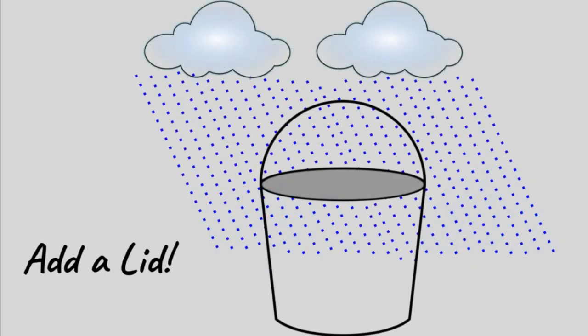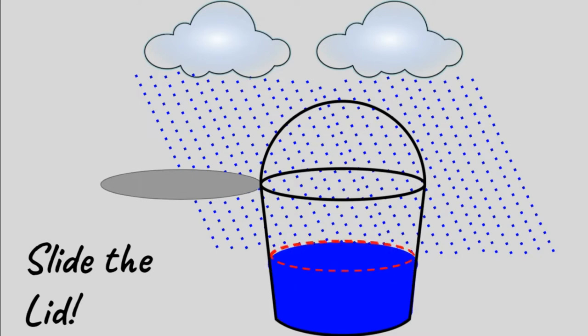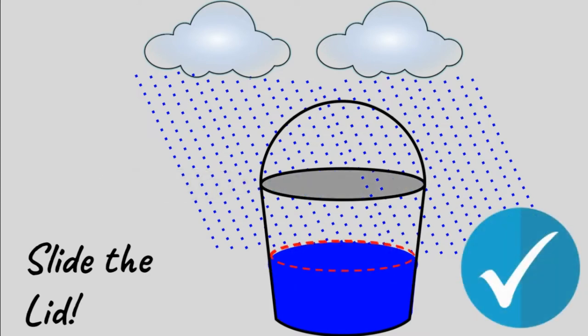Another way to accomplish this is to add a lid on the bucket. When you slide the lid open, water starts to fill up in the bucket. As soon as it reaches the desired level, you close the lid and you're done. Interestingly enough, the lid you just added to the bucket can be thought of as a shutter, which closes shut and blocks rain entering the bucket.